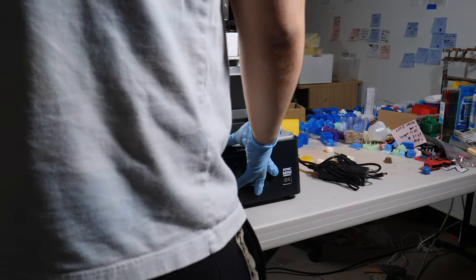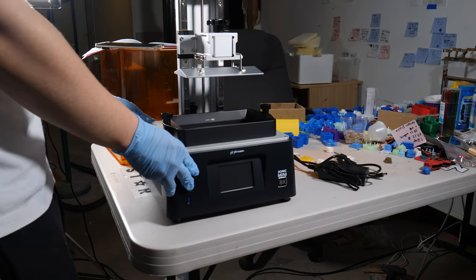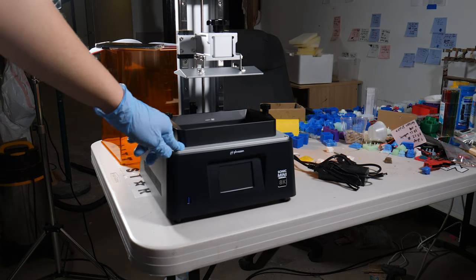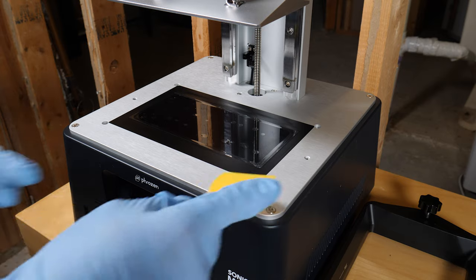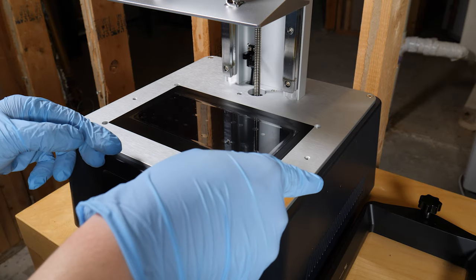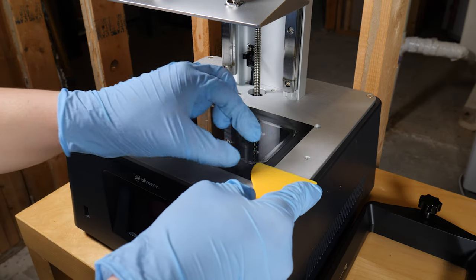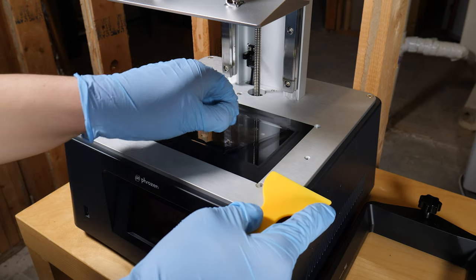And the first thing I notice is that my table is definitely not completely level, as the 3D printer has a lot of wobble to it. So I moved my printer to a more level surface, and now I'm peeling off the protective film off the printer's LCD.